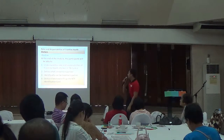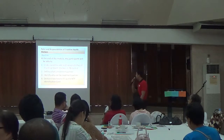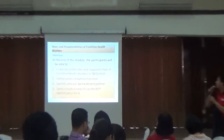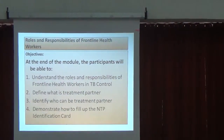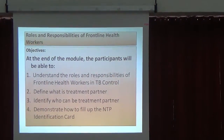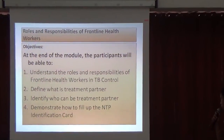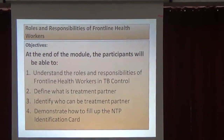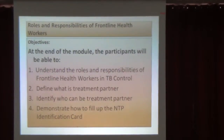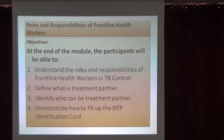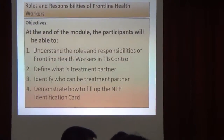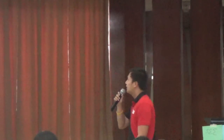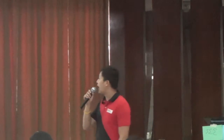Objectives. At the end of the module, the participants will be able to: 1. Understand the roles and responsibilities of frontline health workers in TB control. 2. Define what is a treatment partner. 3. Identify who can be a treatment partner. And 4. Demonstrate how to fill up the NTP identification card.